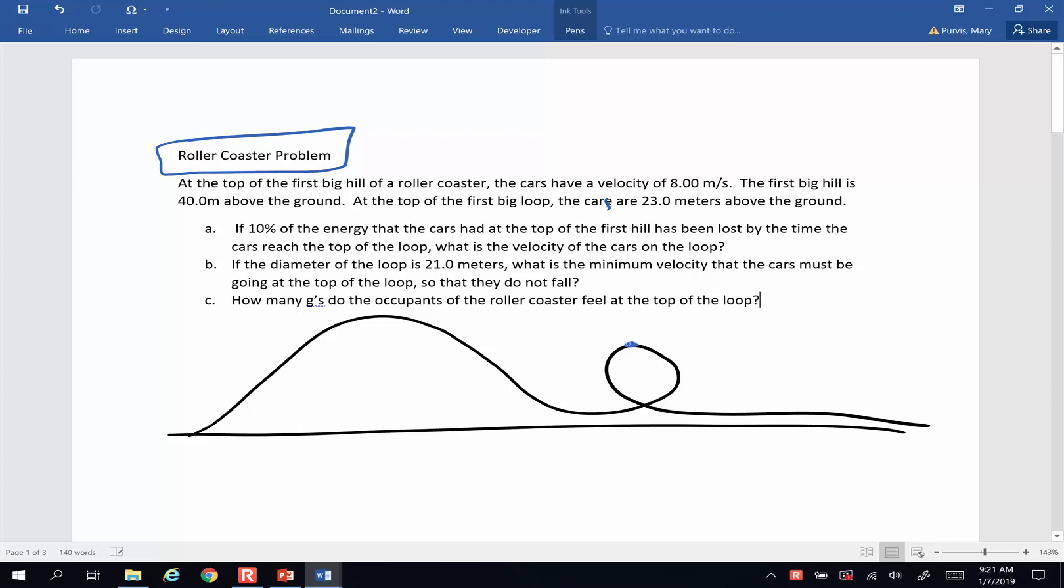Now remember we talked about the fact that energy is lovely because if you can ignore friction or you can account for it easily by taking a percentage, path doesn't matter. So here's what we're going to do. At the top of the first hill, we're going to look at the total energy involved and at the top of the first loop, we're going to look at the total energy involved. And because we just have a nice factor of 10% of energy loss between A and B, we're going to deal with that mathematically.